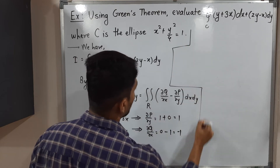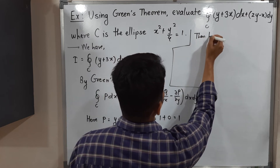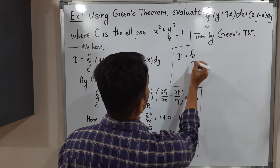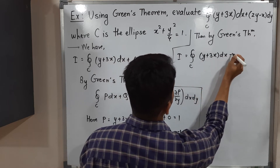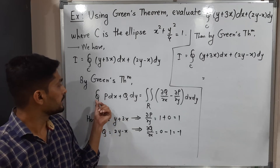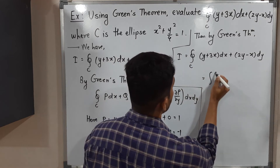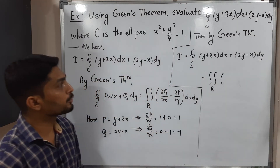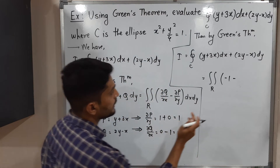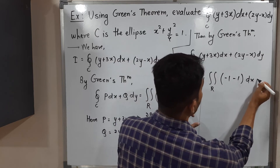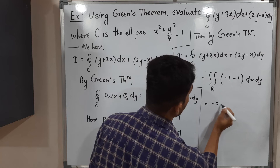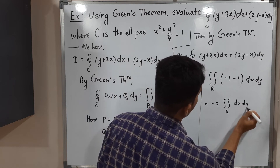Applying Green's theorem, I = ∮_C (y + 3x)dx + (2y − x)dy equals the double integral over R of (∂Q/∂x − ∂P/∂y) dx dy. Substituting, ∂Q/∂x = −1 and ∂P/∂y = 1, so we get (−1 − 1) = −2. Since −2 is a constant, we can take it outside: I = −2 ∬_R dx dy.